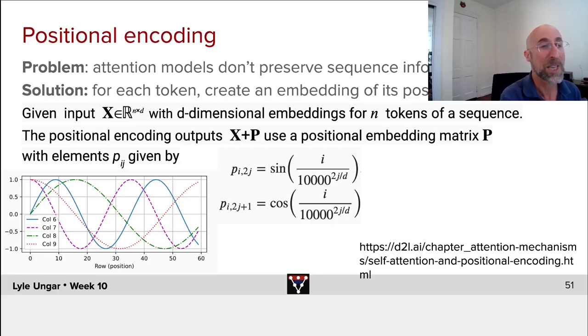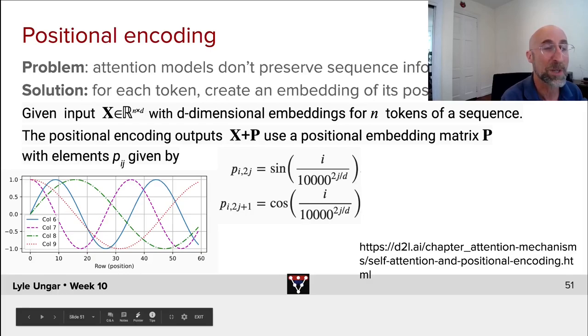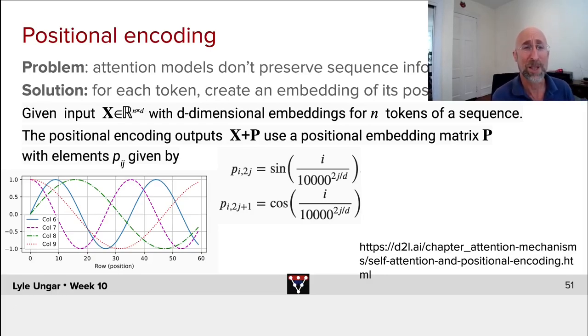What you're doing is having a slow sine and a faster sine and a faster sine and shorter ones, and this turns out to give a nice representation that lets the neural net keep track of where it is.